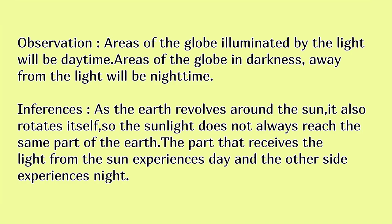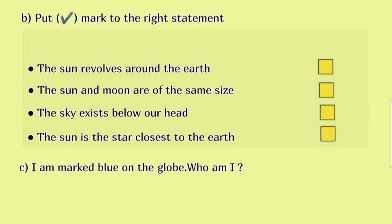Inference: As the earth revolves around the sun, it also rotates itself. So the sunlight does not always reach the same part of the earth. The part that receives the light from the sun experiences day, and the other side experiences night. B. The correct statement is: The sun is the star closest to the earth.